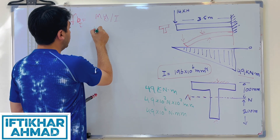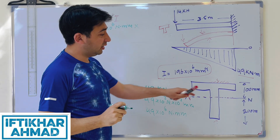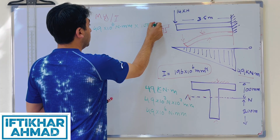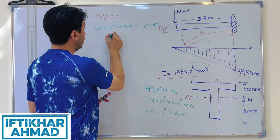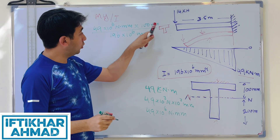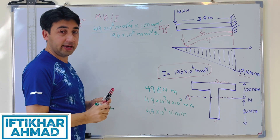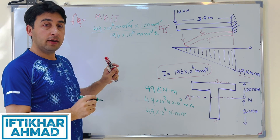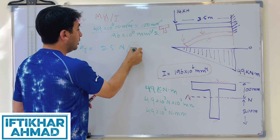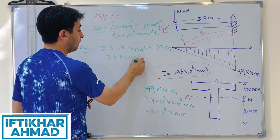Putting the values into the formula: bending moment M = 49 × 10⁶ N·mm, y = 100 mm, and moment of inertia I = 196 × 10⁶ mm⁴. The millimeter units partially cancel, leaving units of N/mm². Calculating this gives f_b in tension = 25 N/mm², which equals 25 megapascals.